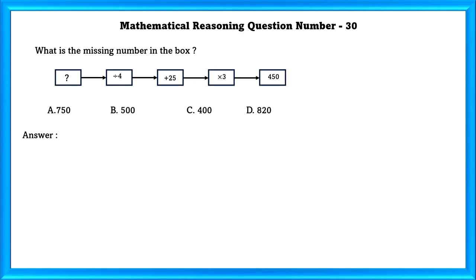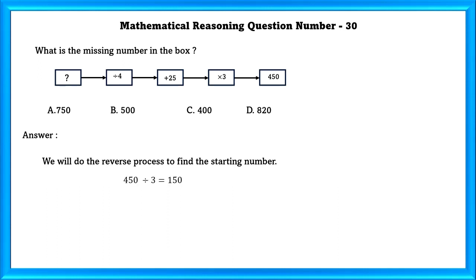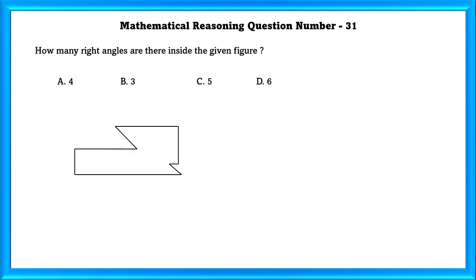Mathematical reasoning question number 30. What is the missing number in the box? We will do the reverse process to find the starting number. Using this, we can find out that 500 is the missing number.